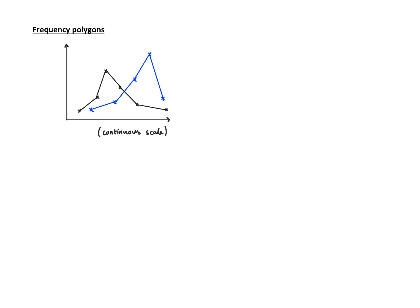If I look at the black one first and say this looks like the mode, because it has the highest frequency here. For the blue one, the mode is further along the continuous scale than the black one. So the blue one clearly has a bigger average. The mode is the best average to use with frequency polygons because you can see it directly — it's just the highest point on the polygon.